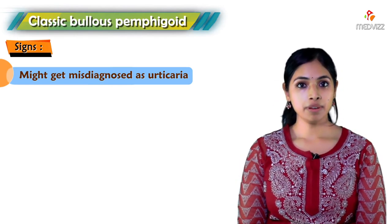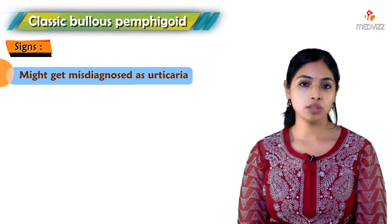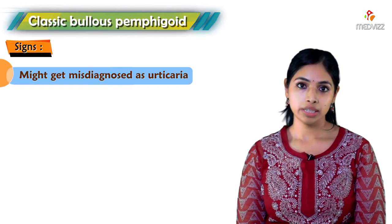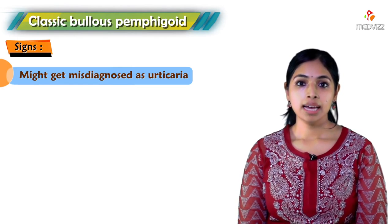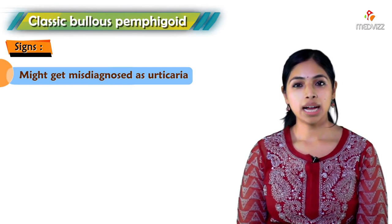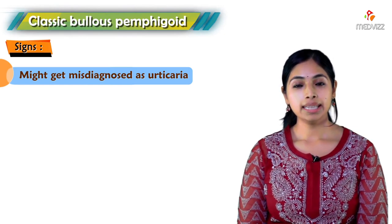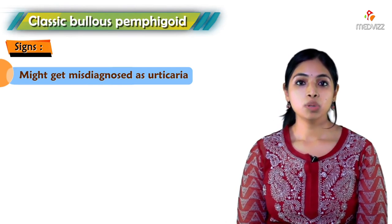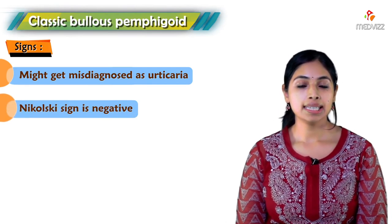In bullous pemphigoid, tense blisters can be present anywhere on the body. They may be symmetrically distributed, mucosal involvement is rare, and the blisters often have clear fluid. They hardly rupture by themselves, and the Nikolsky sign is negative.